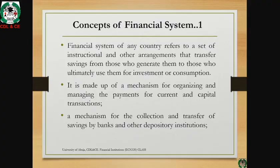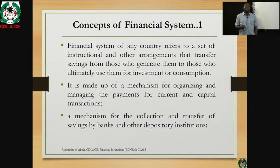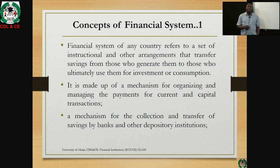Those who borrow are those whose current income is less than their current consumption or expenditure. Therefore they have to borrow, especially for investment purposes. Most times business people are the ones that borrow, while households are mostly the ones that save. The financial system is also made up of a mechanism for organizing and managing payment for current and capital transactions.